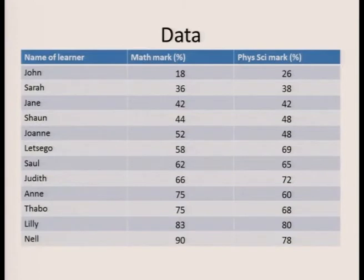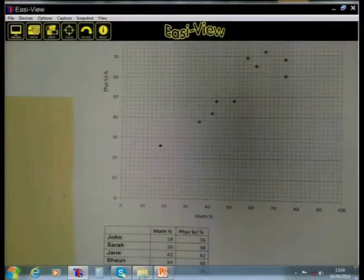Let us look at the data that is given to us. Here are some data of learners and you will see there is a mark that the learner obtained for mathematics and a second mark for physical science. Both these marks are displayed as percentages, in other words a mark out of 100. Here is your data set, it is the 12 learners that we are going to use to display the data for.